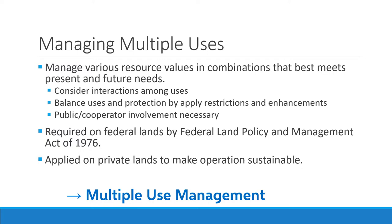For example, they might apply a road restriction because of a fire hazard, an invasive species, or a wildlife species of concern. On the other hand, they might apply enhancements — improving camping in an area to increase recreational use. FLPMA also requires that public lands include the public or cooperators in decision-making. While the act applies to federal lands, private landowners also manage lands with multiple use in mind — largely to make their operations sustainable, combining economic stability with the social values of their family or community.